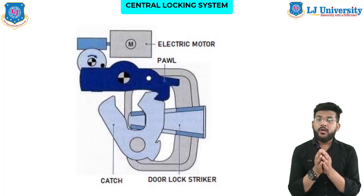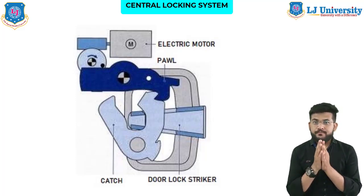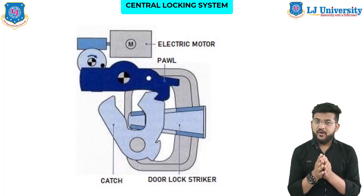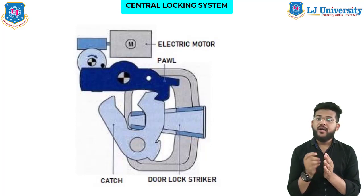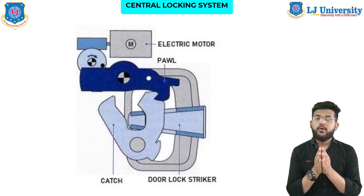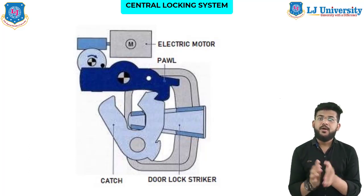The door assembly consists of the catch, ball, and latch. The door lock striker is attached to the body pillar. During closing, the door lock striker gets caught by the latch and holds it in the closed position. The pawl positively locks the catch in position. This lock condition is automatically released when the opening procedure begins — force acting on the inner or outer door handles is transferred to the pawl, causing the catch to release and open the door.